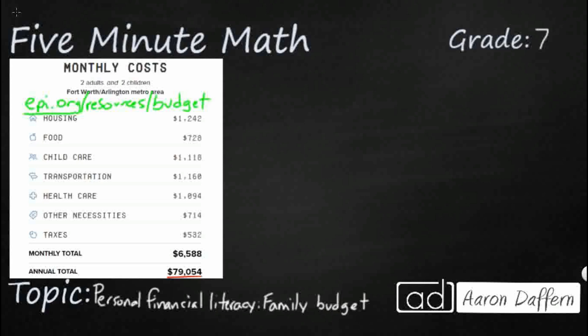When you get there, at the very top you'll get some drop-downs asking how many adults and how many children. I chose two adults and two children. You also need to search for your area — I live in the Fort Worth–Arlington metro area in Texas, so I selected that. You can also search by county if you live in a very small town. Find the smallest unit of area near where you live, and if you can't find your city, search for the county. Once you have that, all of these numbers are going to pop up.